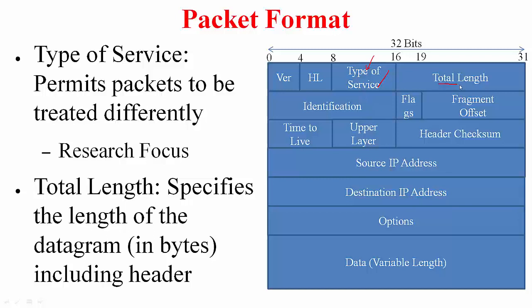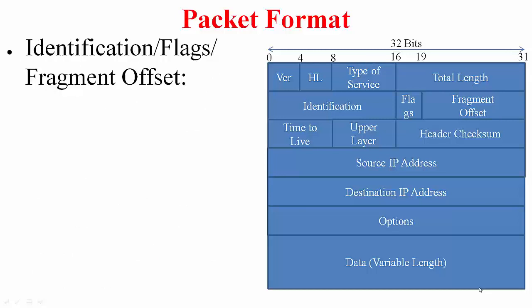Following this is the total length field which specifies the entire length of the datagram including the header in bytes. Note this is not in 32-bit words but in bytes. Then come the fields identification, flags, and fragment offset. This is to help in the fragmentation and reassembly that I mentioned earlier.